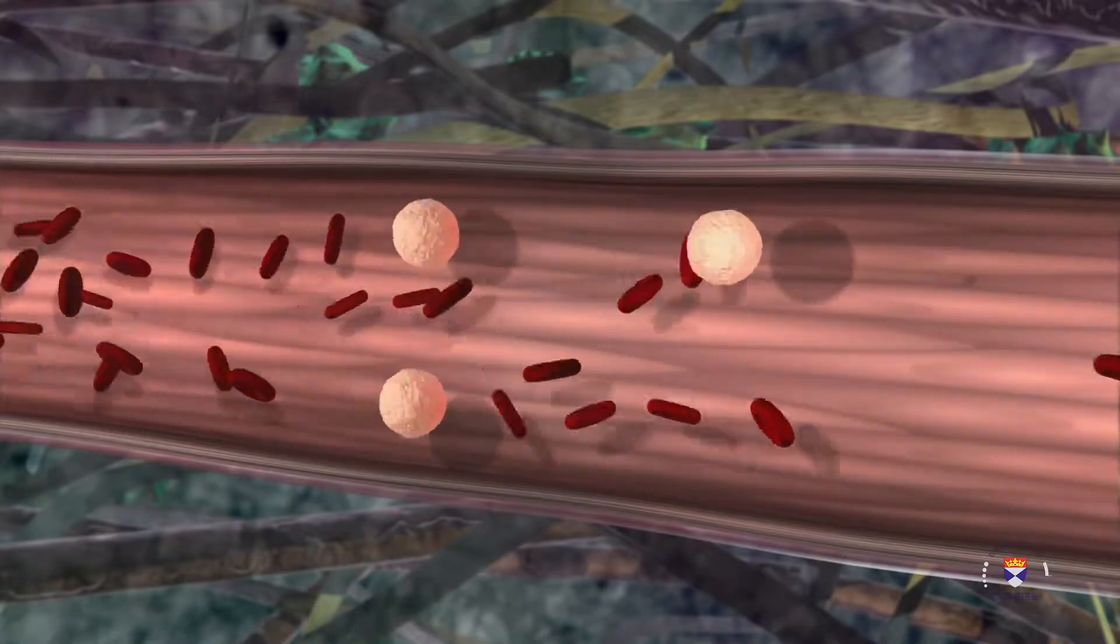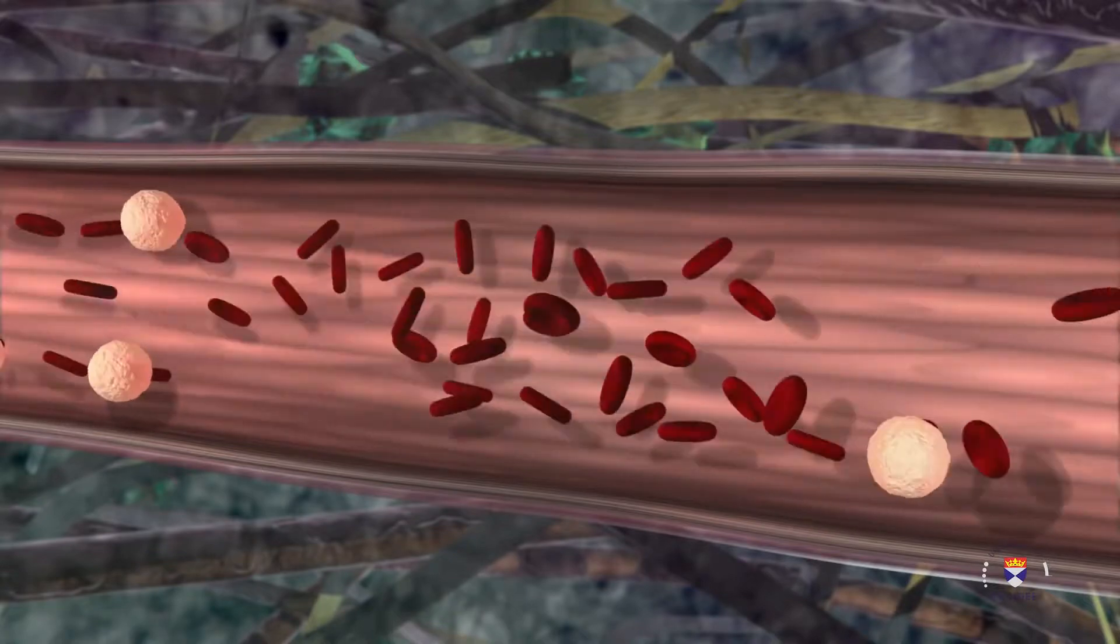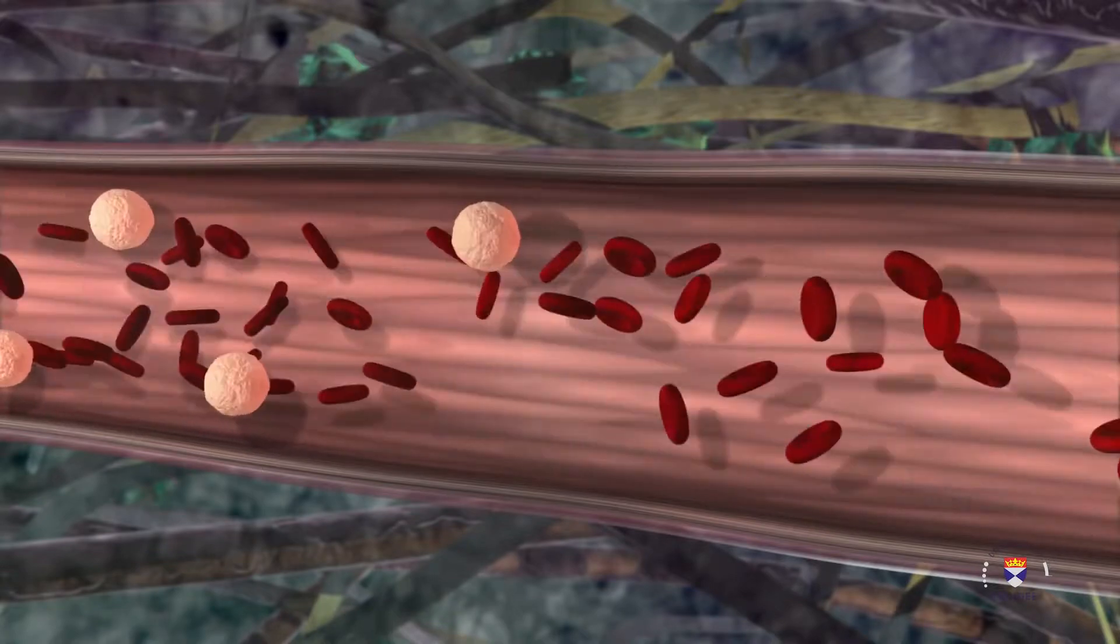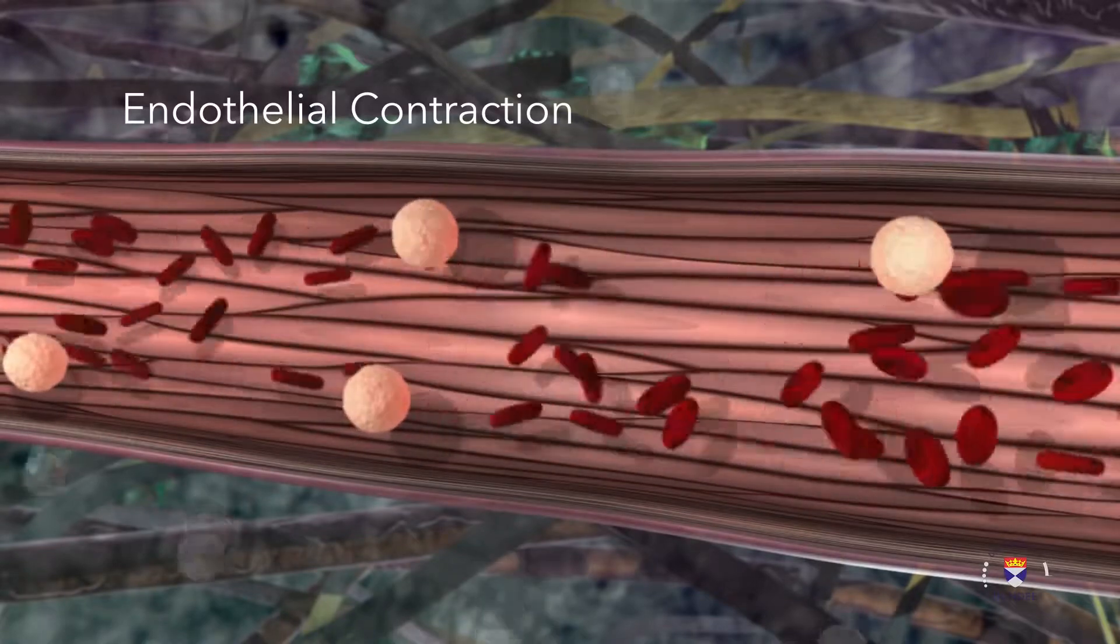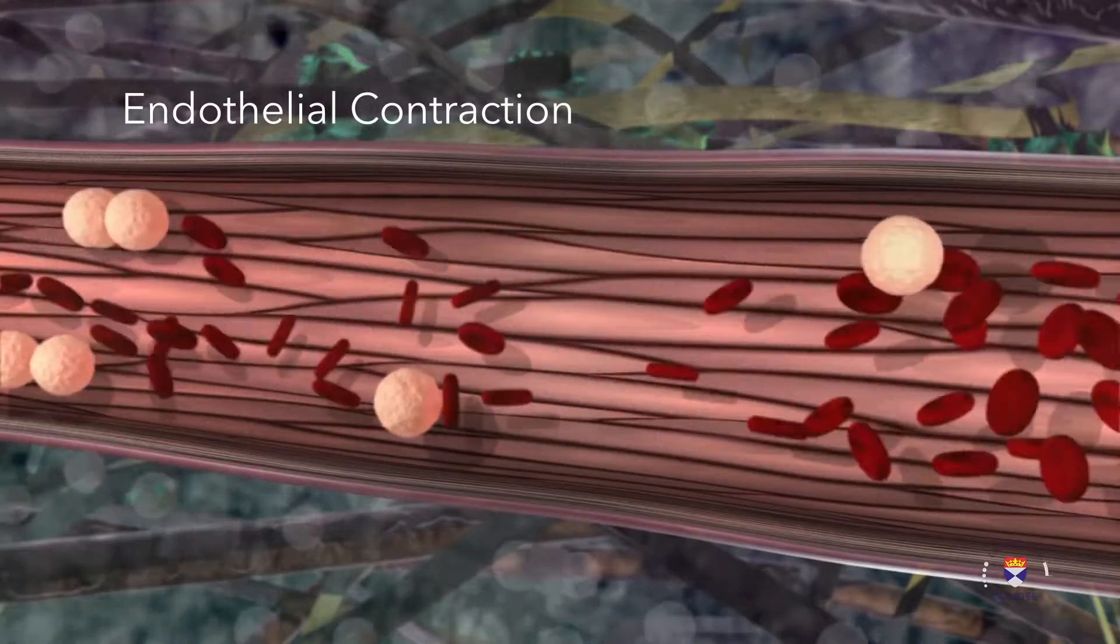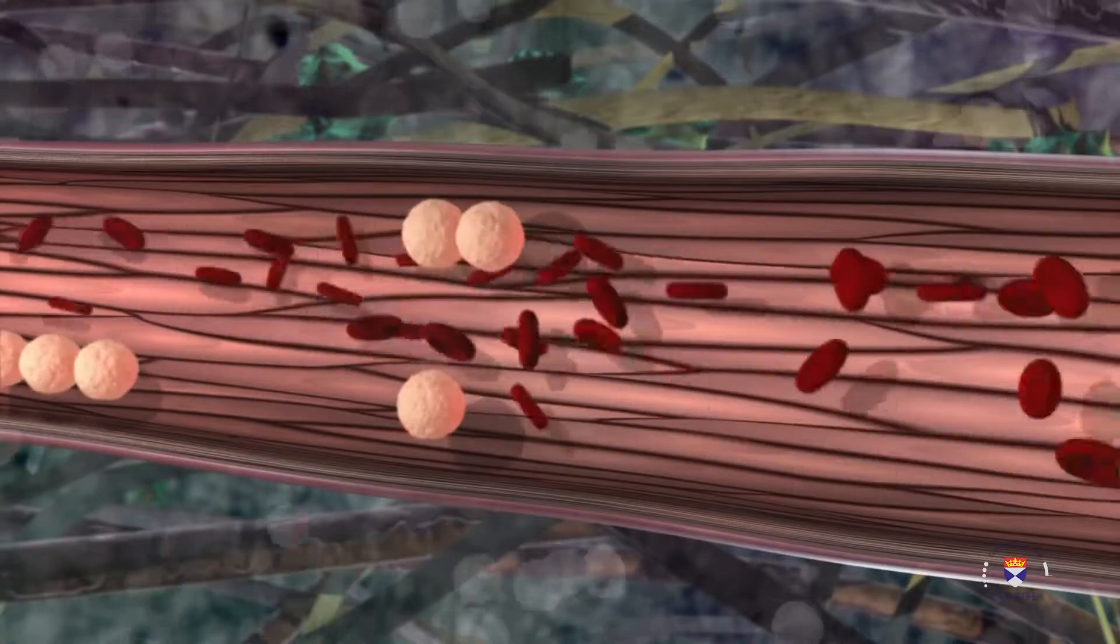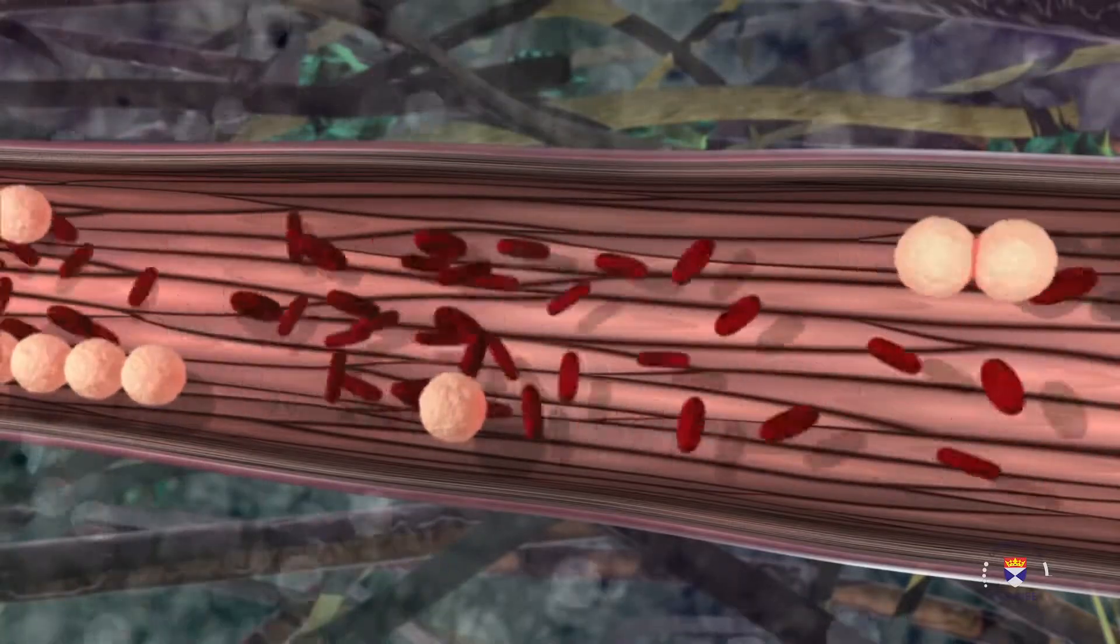Chemical signals released from the site of injury cause changes to the endothelial wall of the vessel. The endothelial cells contract, allowing fluid into the surrounding tissues through the gaps in the cells and resulting in one of the clinical signs of inflammation, swelling or oedema.